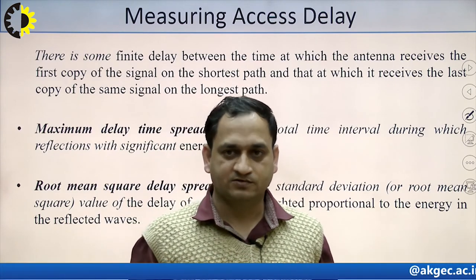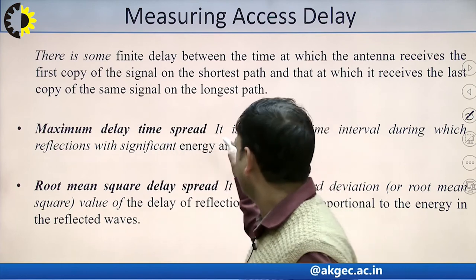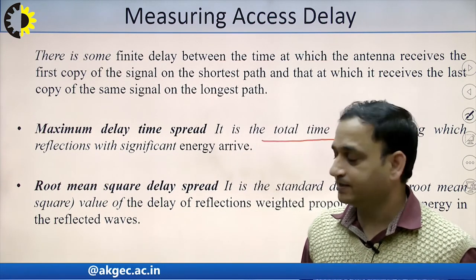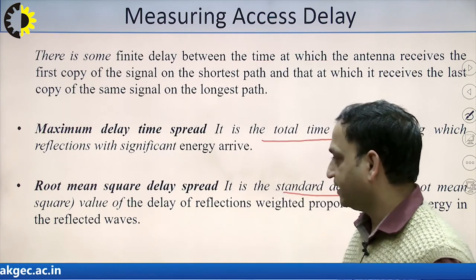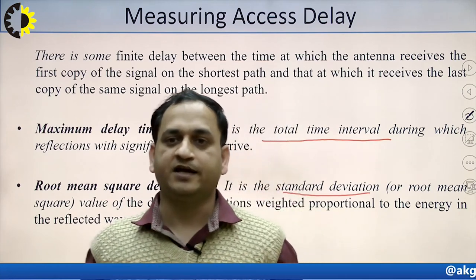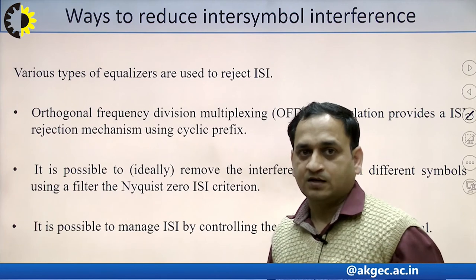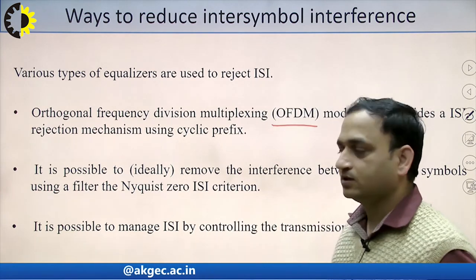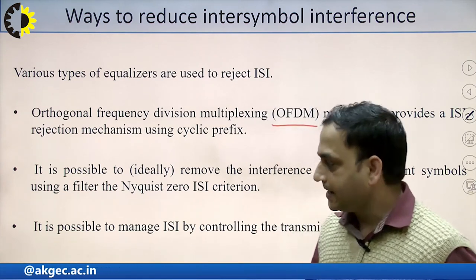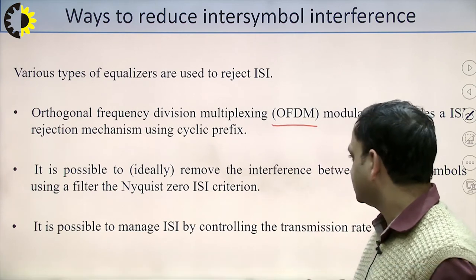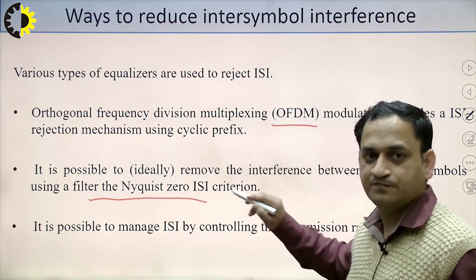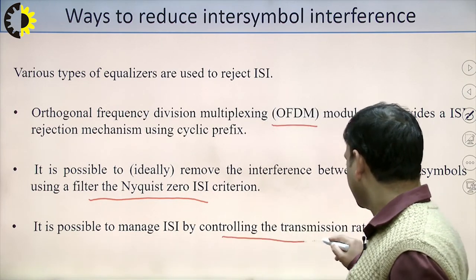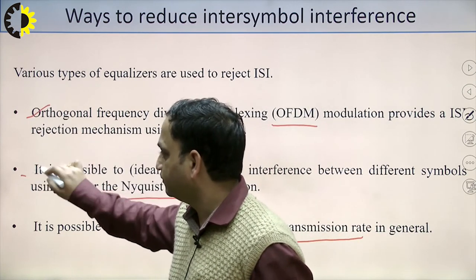The maximum delay spread is the total time interval during which reflections with significant energy arrive. The RMS delay spread is the standard deviation of the delay of reflections weighted by energy in the reflected wave. To reduce inter-symbol interference, we can use OFDM (orthogonal frequency division multiplexing), apply a Nyquist zero-ISI criteria filter, or control the transmission rate.